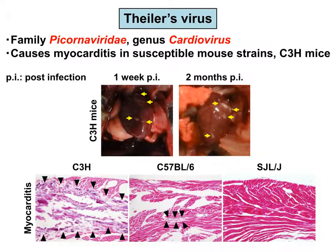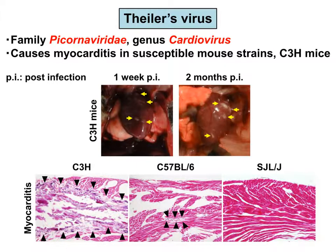In this study, we infected mice with Theiler's virus, a member of the picornavirus family, Cardiovirus genus. We found macroscopic lesions at one week, which enlarged at two months. Among mouse strains, C3H mice develop the most severe myocarditis with calcification.